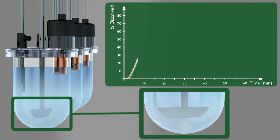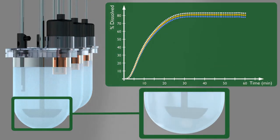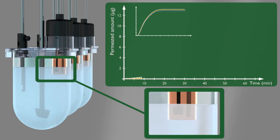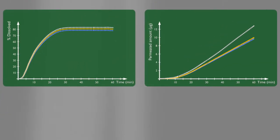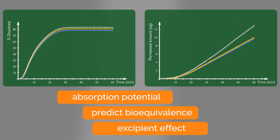From a flux experiment, you get a dissolution curve under bio-relevant conditions, and more importantly, real-time information on permeated drug substance. This data allows you to accurately compare absorption potential, predict bioequivalence, and study excipient effect.